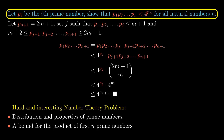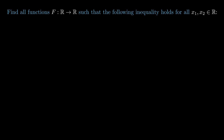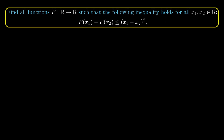Now let's solve the second problem. We want to find all functions f: ℝ → ℝ such that for all x_1, x_2 in the real numbers, the inequality |f(x_1) - f(x_2)| ≤ (x_1 - x_2)² holds. Do pause the video here if you want to give this problem a try.